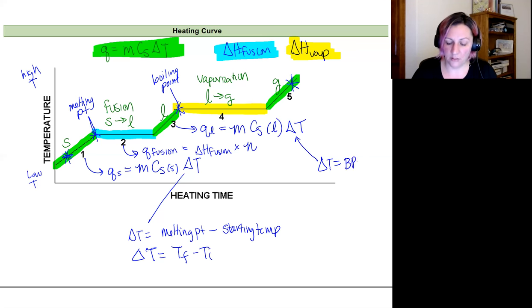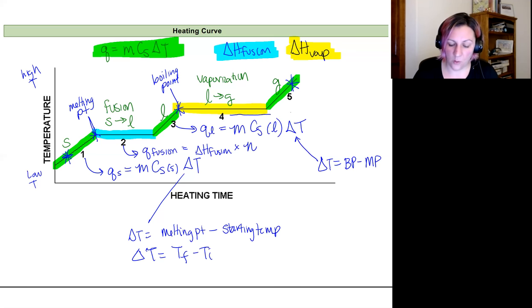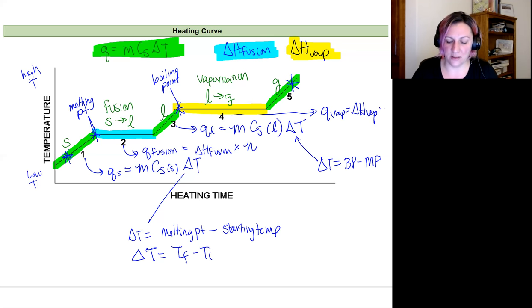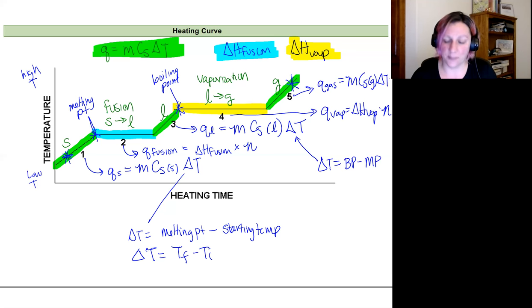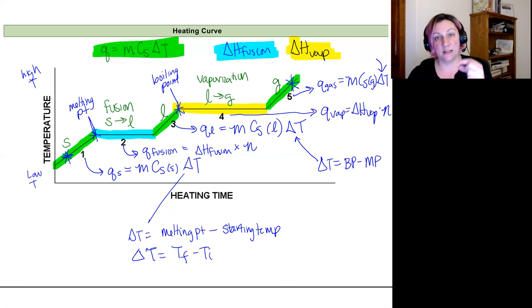So for region three, ΔT = boiling point minus melting point. For region four, q_vaporization = enthalpy of vaporization × number of moles. For region five, q_gas = mass × specific heat of gas × ΔT, where ΔT = final temperature minus boiling point.